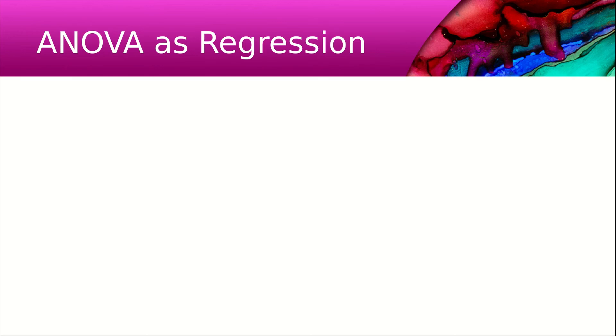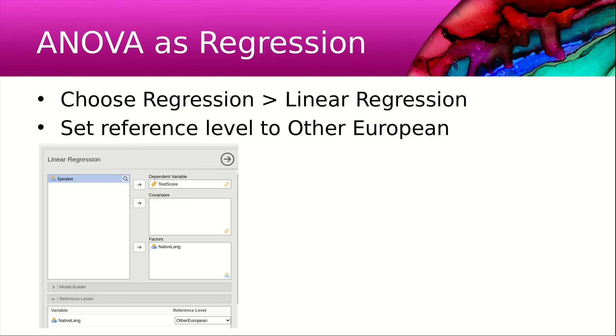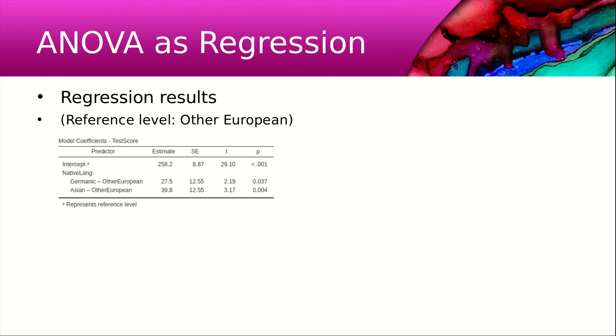How about running an ANOVA as regression? Choose regression, linear regression. Set the reference level to other European. Here are the regression results, and what's nice about it is it gives us the comparisons already. It shows that other European is significantly different from German, and other European is also significantly different from Asian. The same differences are found as in the ANOVA.